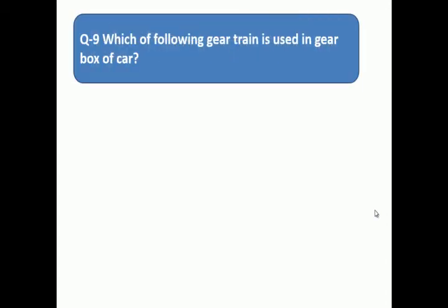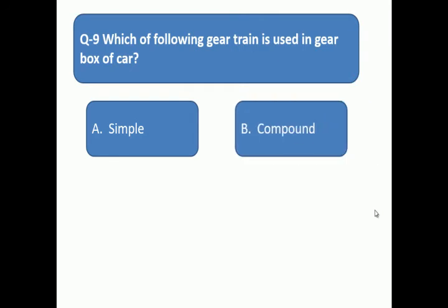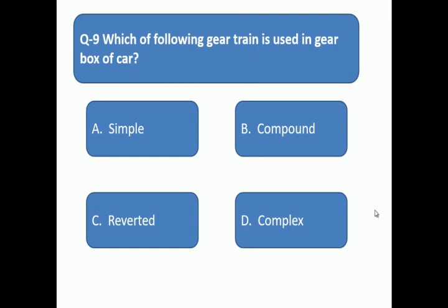Question 9: Which of the following gear train is used in gearbox of car? Which type of gear train is used in car gearbox? A: simple, B: compound, C: reverted, D: complex.